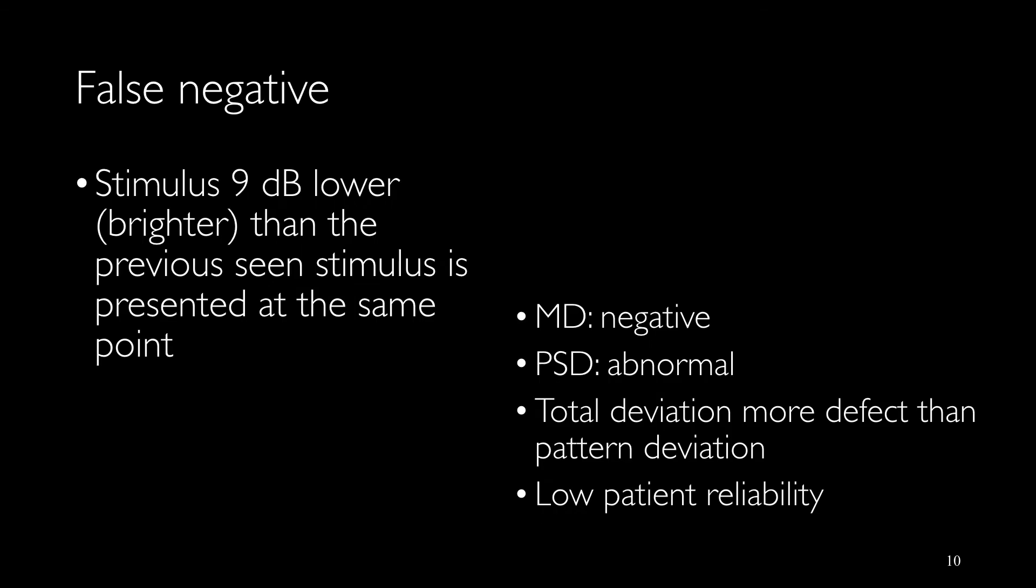For checking false negatives, a stimulus 9 dB brighter than the stimulus that the patient saw at that specific location is presented to the patient. If the patient does not see the brighter light, it will be reported as false negative. Defining false negative: mean deviation abnormal, PSD abnormal, and the total deviation usually is darker than the pattern deviation plot, and we get the low patient reliability message.